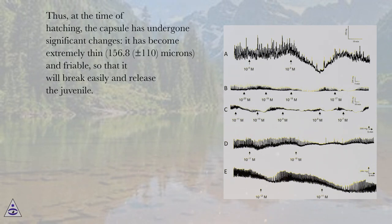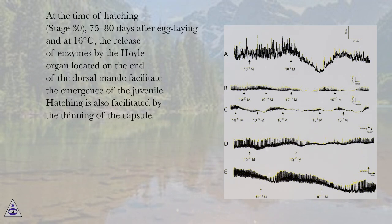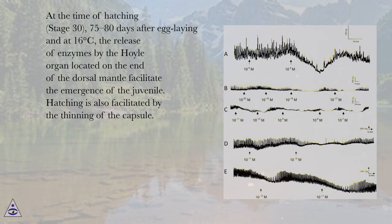Thus, at the time of hatching, the capsule has undergone significant changes: it has become extremely thin, 156.8 ± 110 microns, and friable, so that it will break easily and release the juvenile. At the time of hatching, stage 30, 75 to 80 days after egg laying and at 16 degrees Celsius, the release of enzymes by the hoyle organ located on the end of the dorsal mantle facilitates the emergence of the juvenile. Hatching is also facilitated by the thinning of the capsule.